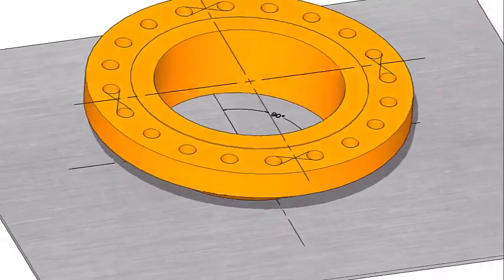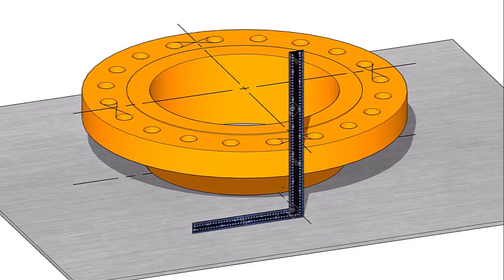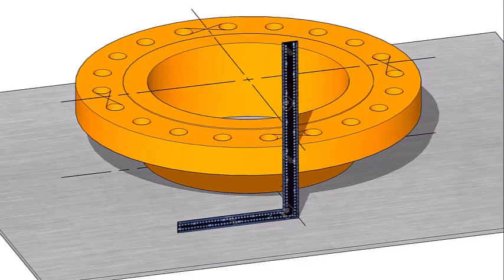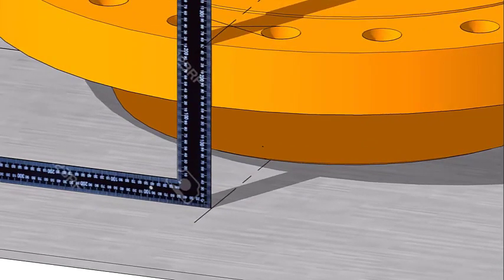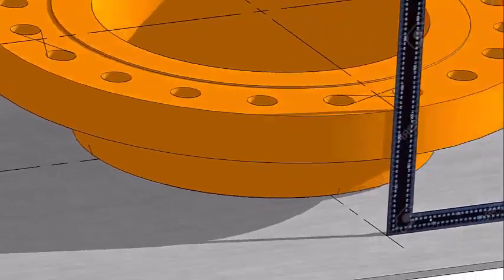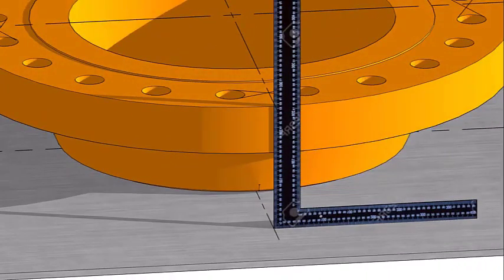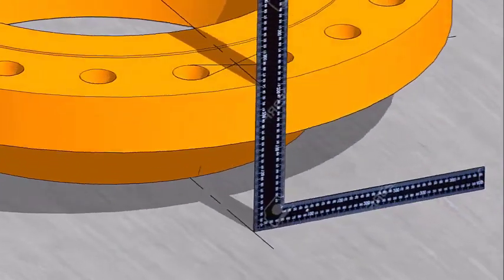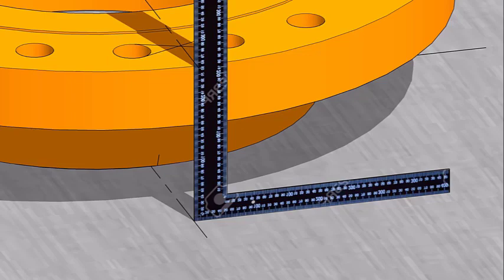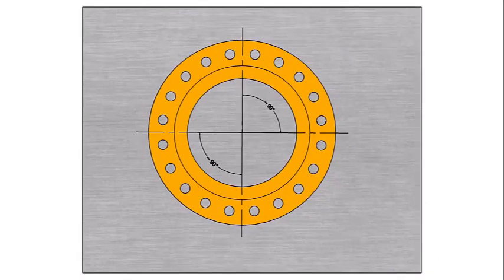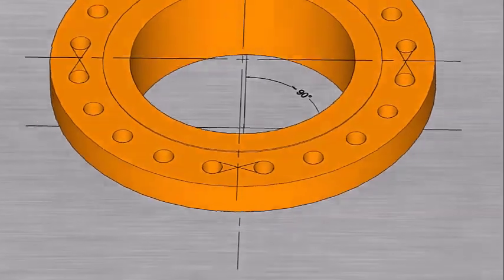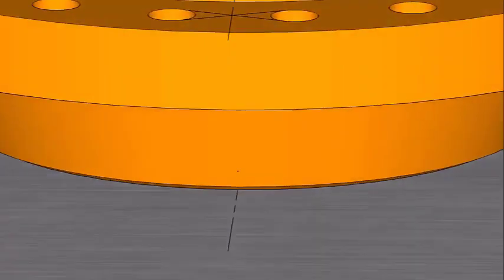Use a right angle and match the center line on the plate and on the flange. Draw small vertical lines on the flange matching the center lines on the plate.